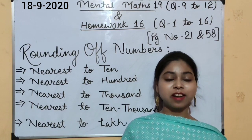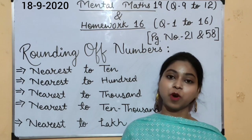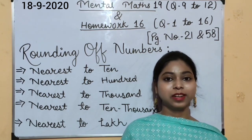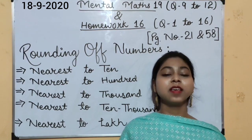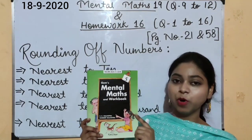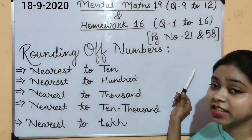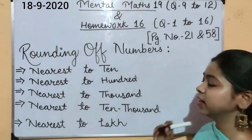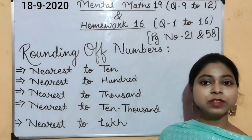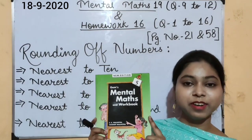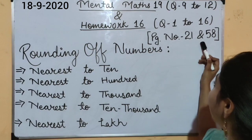As we have already studied this topic in our previous classes, in Chapter 1, Large Numbers, from our book. After understanding the topic, you need to solve various questions in our Mental Maths book. The worksheets you need to solve are Mental Maths 19, question numbers 9 to 12, and Homework Worksheet 60, questions 1 to 60. These two worksheets are given in your Mental Maths book on page numbers 21 and 58.